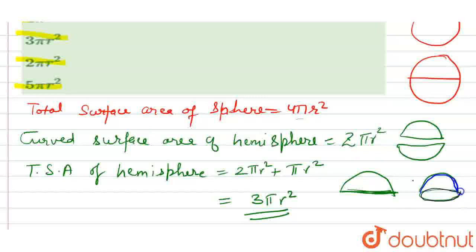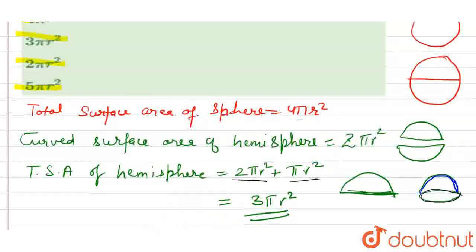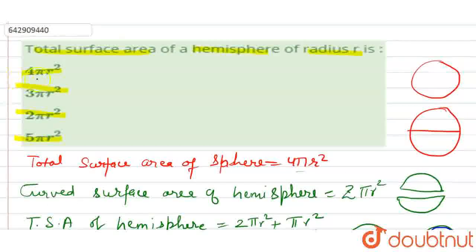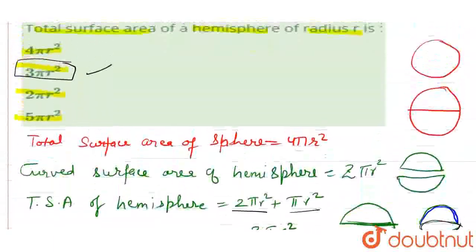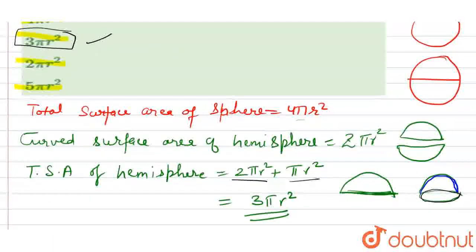The curved surface area plus the circle area formula is πr², which gives 3πr². The answer is the total surface area of the hemisphere is 3πr². Option is 3πr², which is the answer. Okay? This is the answer.